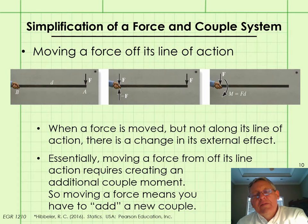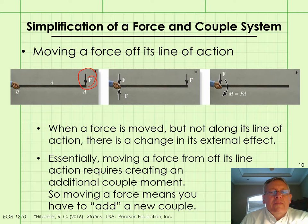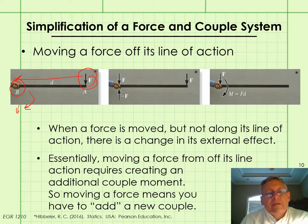Now let's apply a vertical downward force at the end of the pipe. The external effect at the grip at B is going to be both a downward force and a moment trying to rotate the pipe in a clockwise manner. If we move the force off its line of action, that moment will disappear. As D decreases and finally goes to zero, the external effect would feel like just the force at B with no moment.